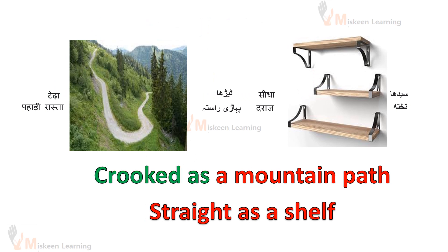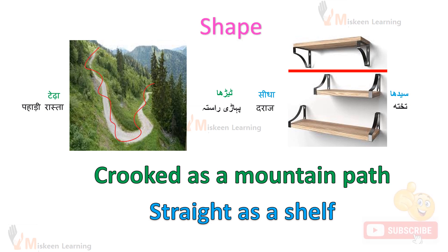Winding as a mountain path — joh mountain ka path hota hai, joo pahari raastah hota hai, us ki tira mehra mehra. Straight as a shelf — aur eek shelf ki tira, seedha. Yahaan comparison ho raha hai shape ke baare meh — we are comparing shape here.